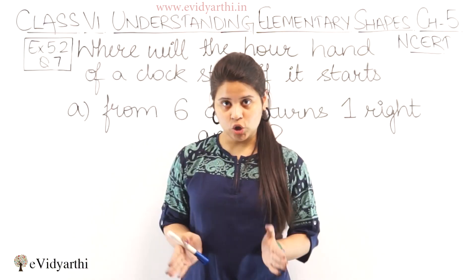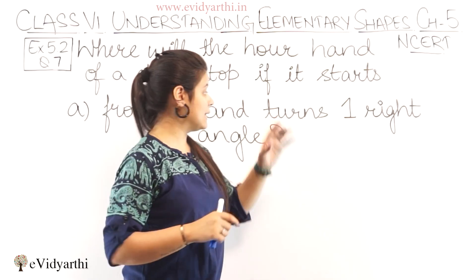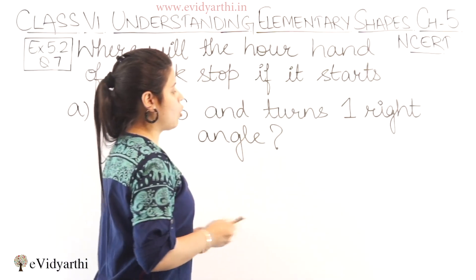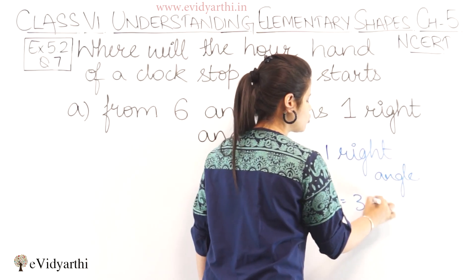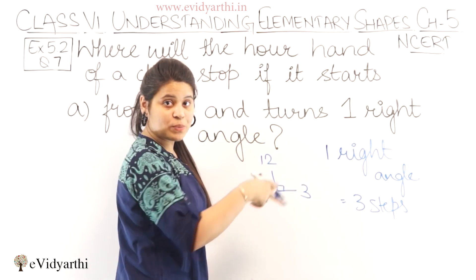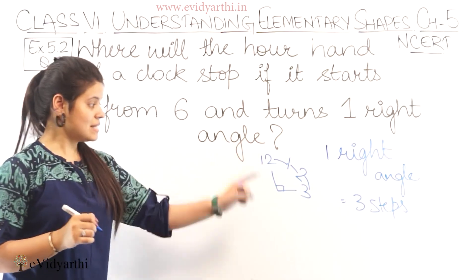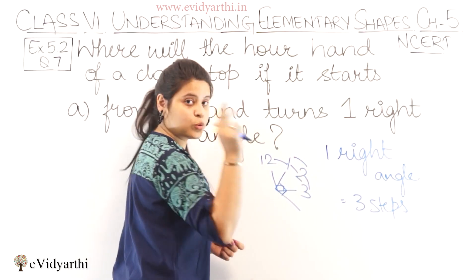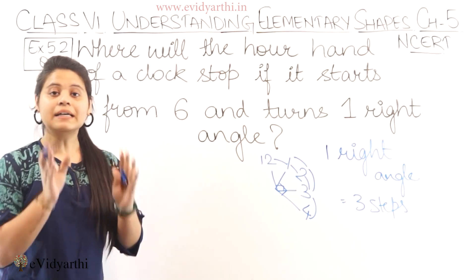Now again we are talking about the clock. Here we have a timing given that the hour hand is at 6. When we talk about a clock, one right angle equals to three steps. How is it? Like if you are on 12 to 3, this is a right angle. But how many numbers are there? 12 to 1, 1 to 2, and then 2 to 3 means 3 steps. So at every 3rd step is a right angle.